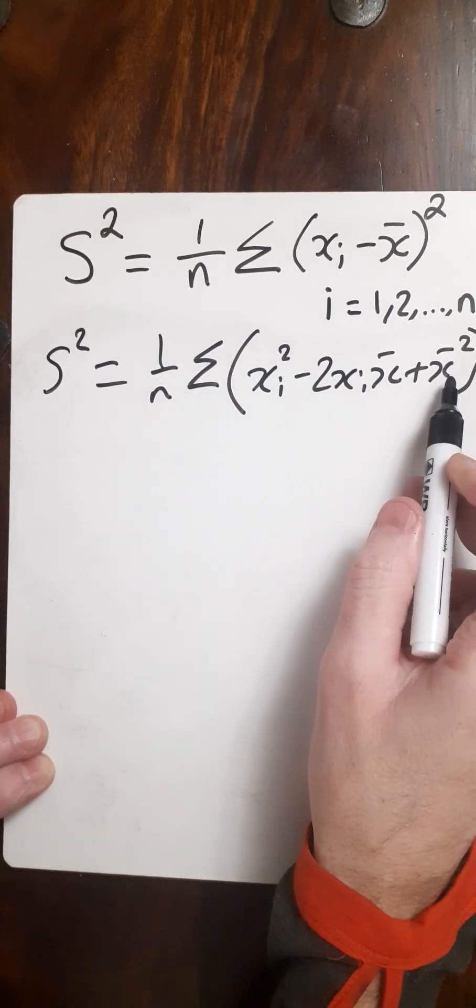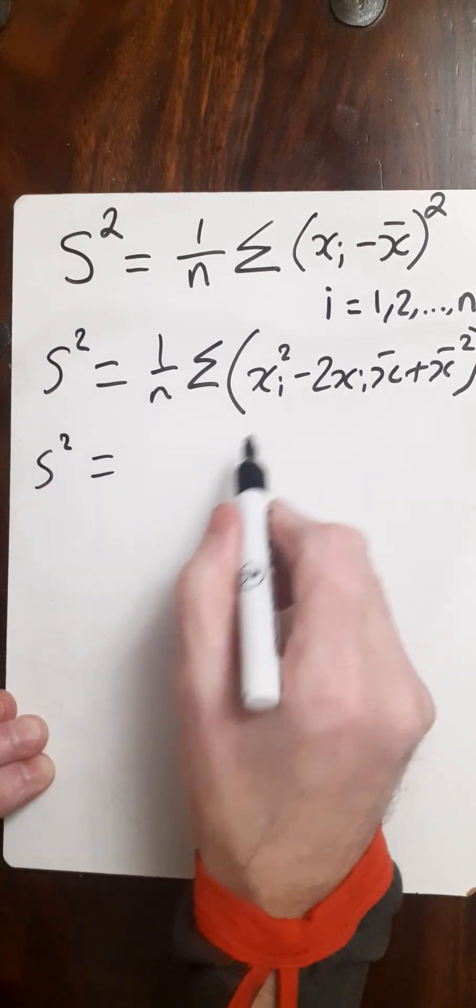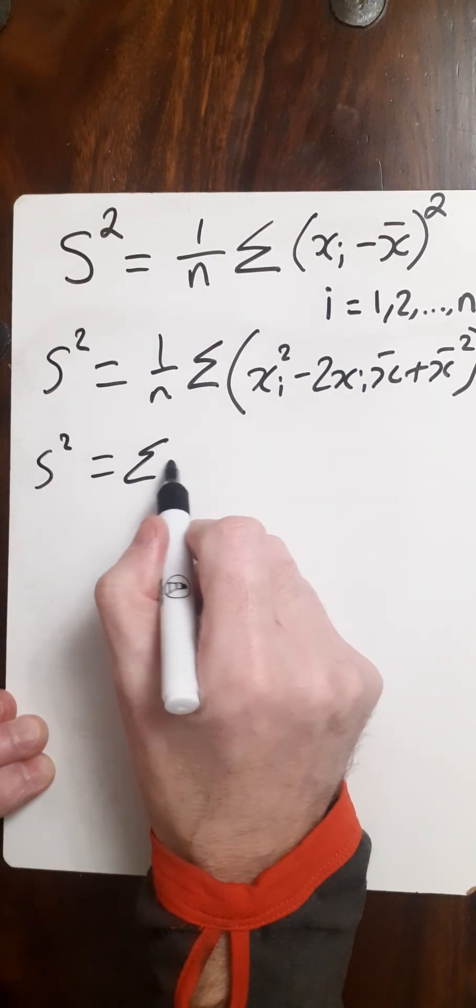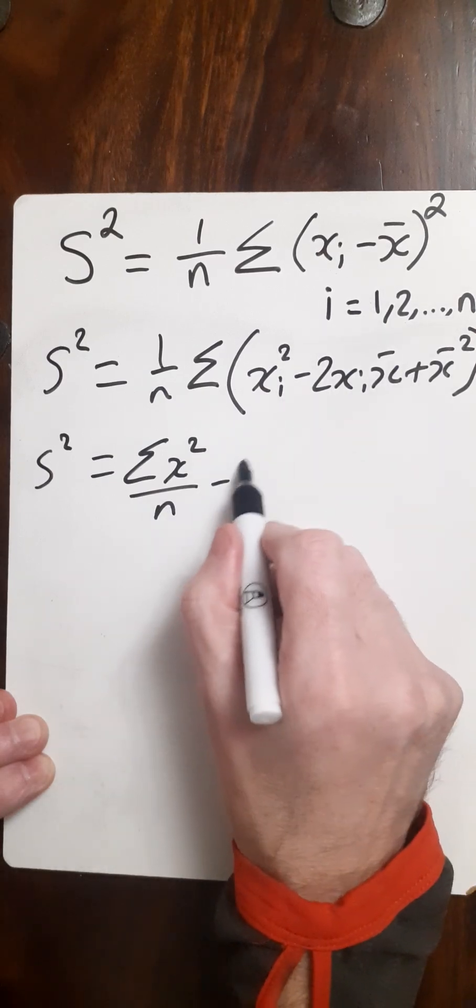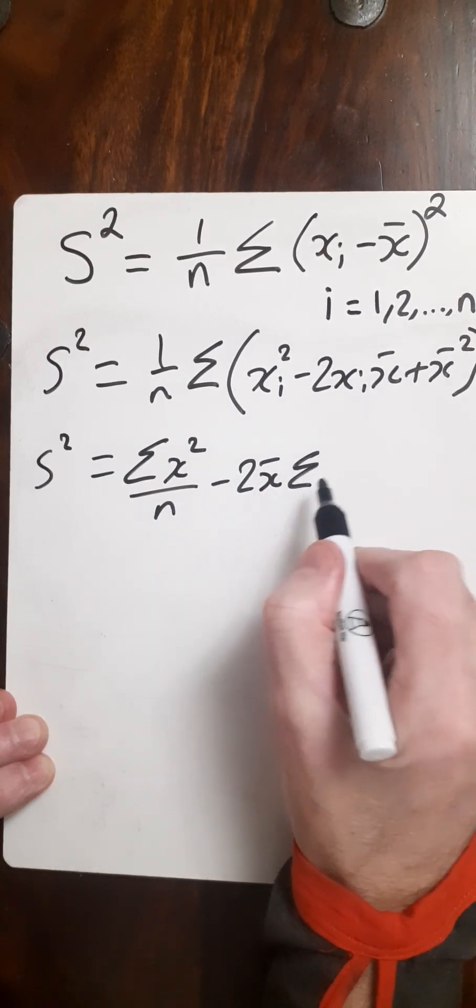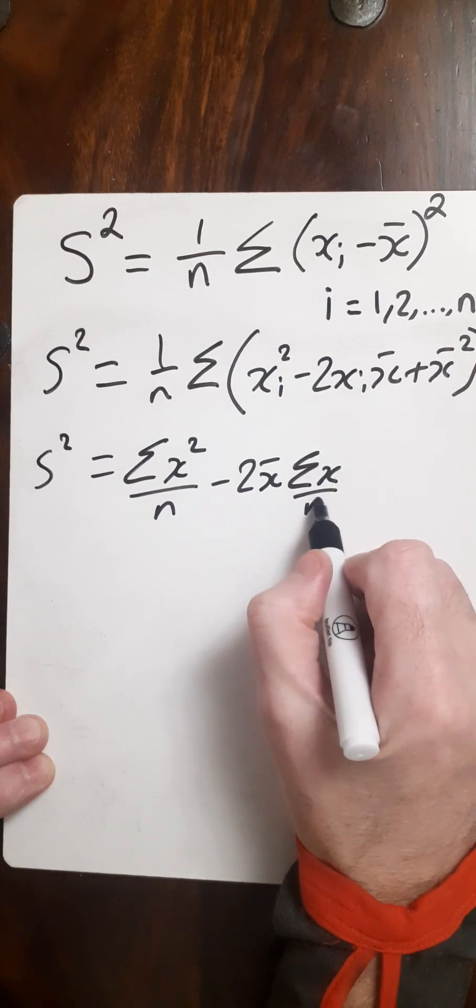So now I've got the sum of the xi squareds over n minus 2 times the mean times the sum of the xi's over n.